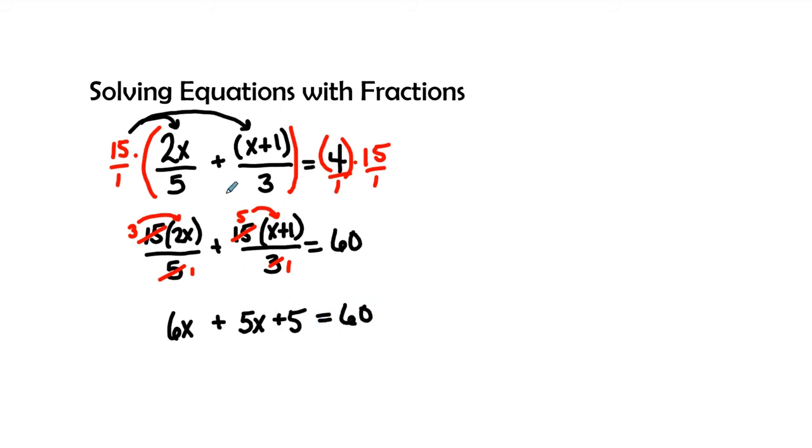There was a lot of stuff that we did here. I kind of combined two steps. Let's go ahead and once we simplify, the 5x and the 6x we'll get 11x plus 5 equals 60.